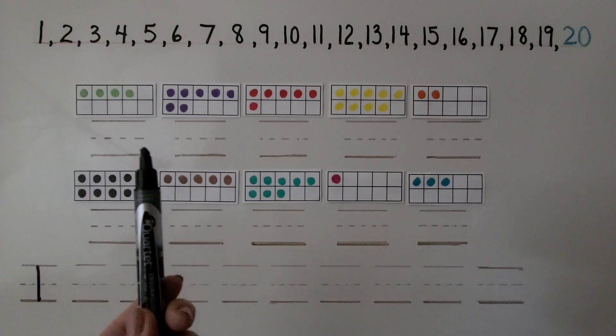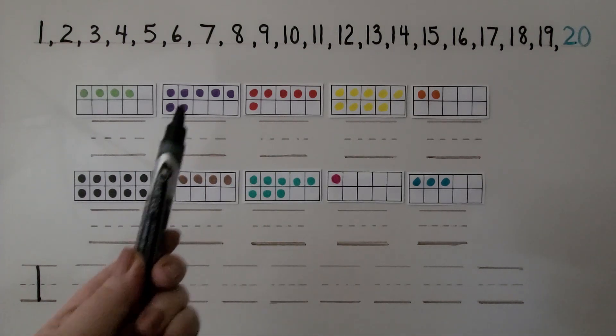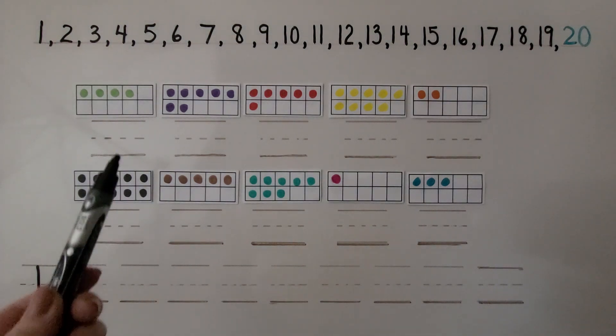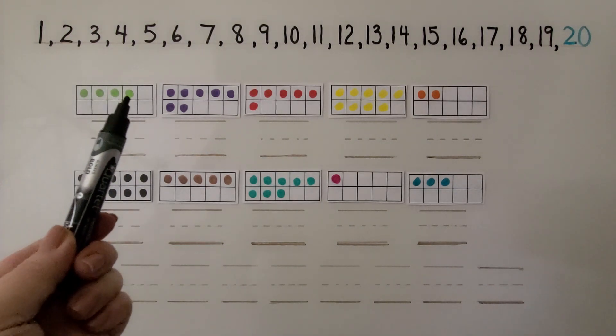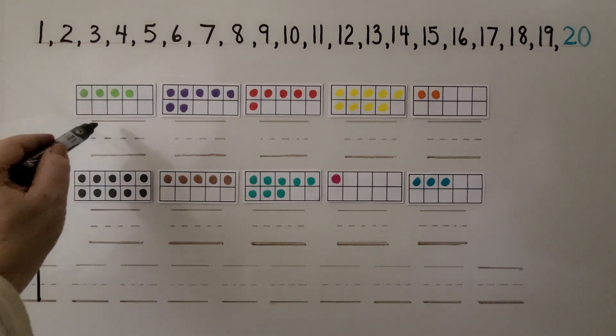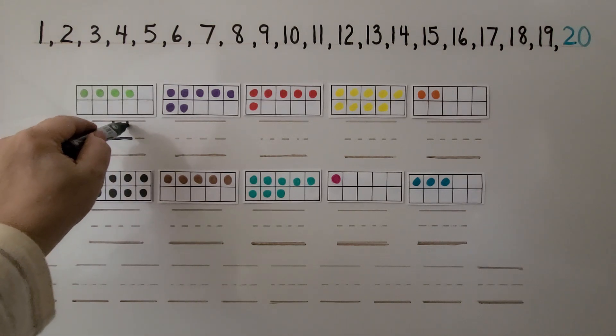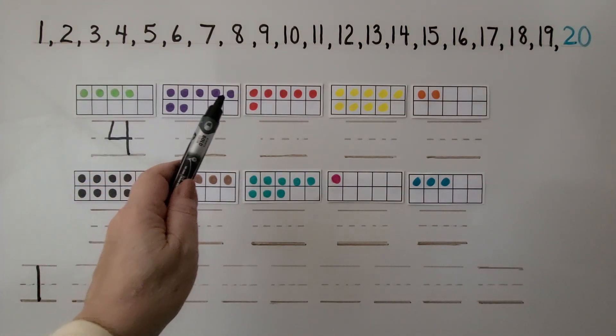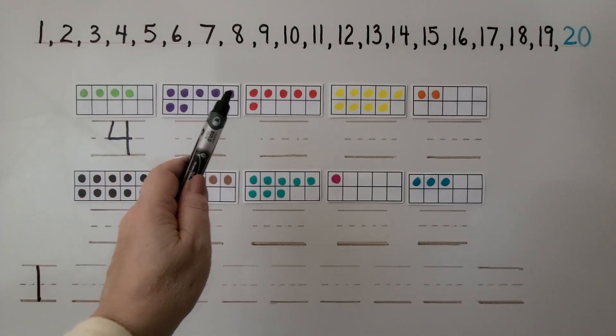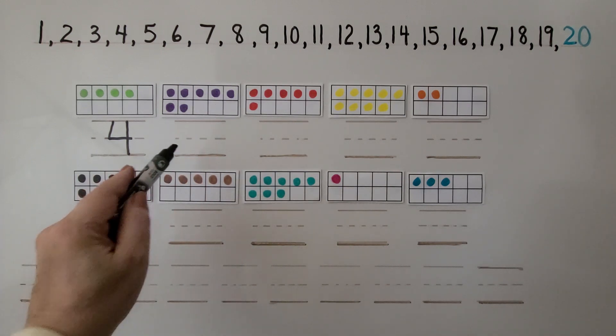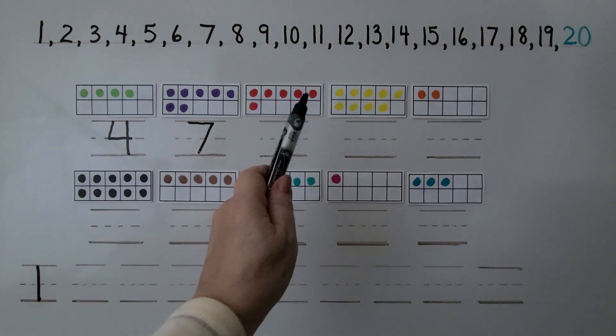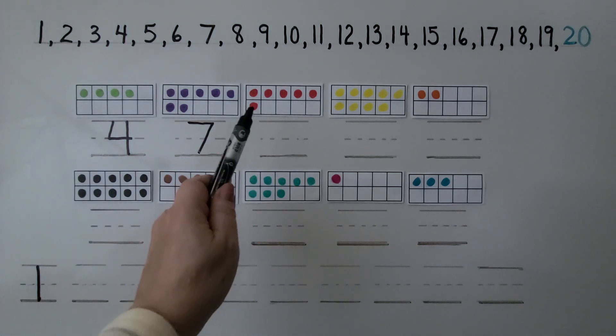Here we have some 10 frames with counters in them. We need to count the dots and write the numbers. In this 10 frame, I see 1, 2, 3, 4. We can write the number 4. For this one, I see 5, because this top row is full. That's 5, 6, 7. We can write 7. In this one, I see the top row is full. So that's 5, and one more is 6.